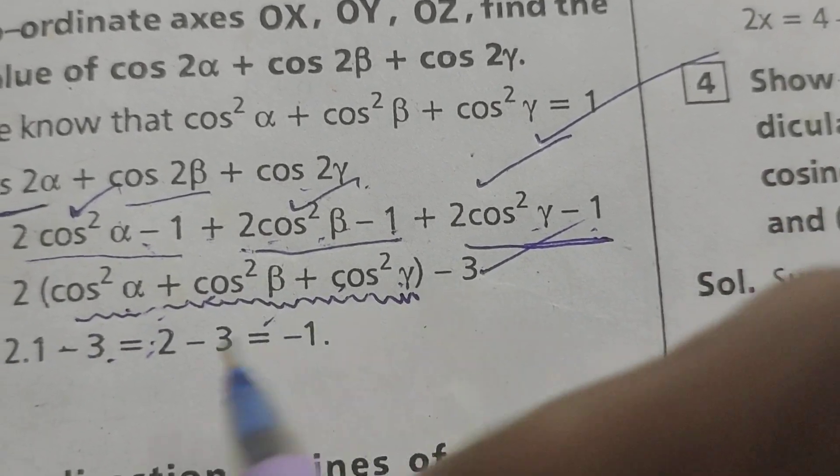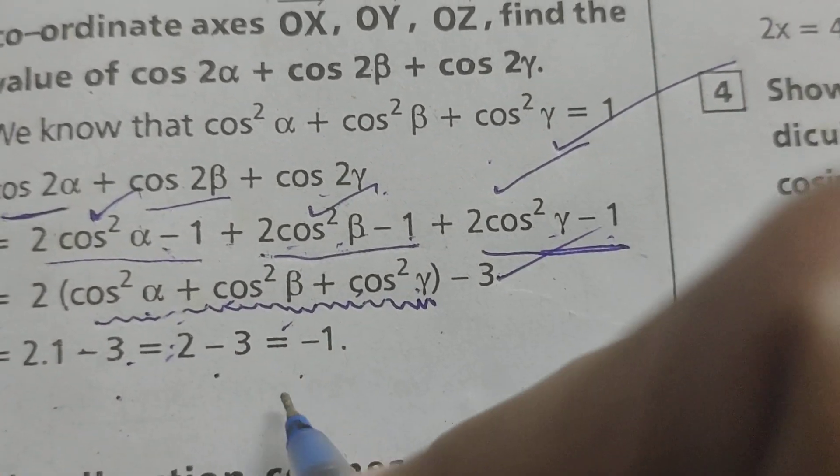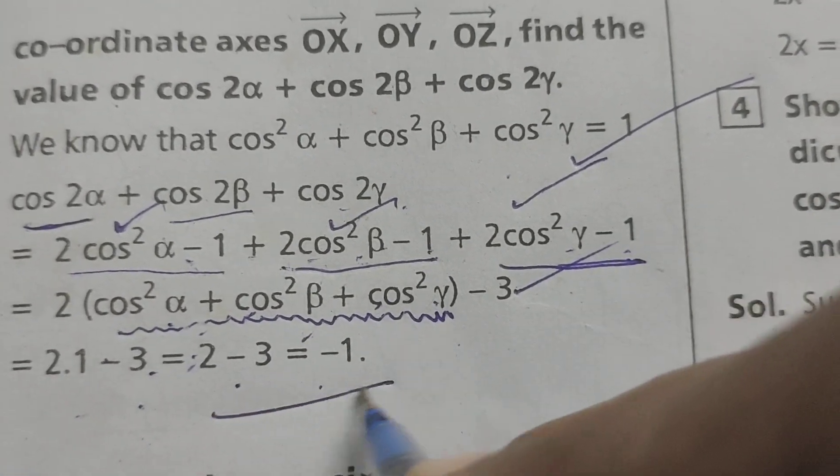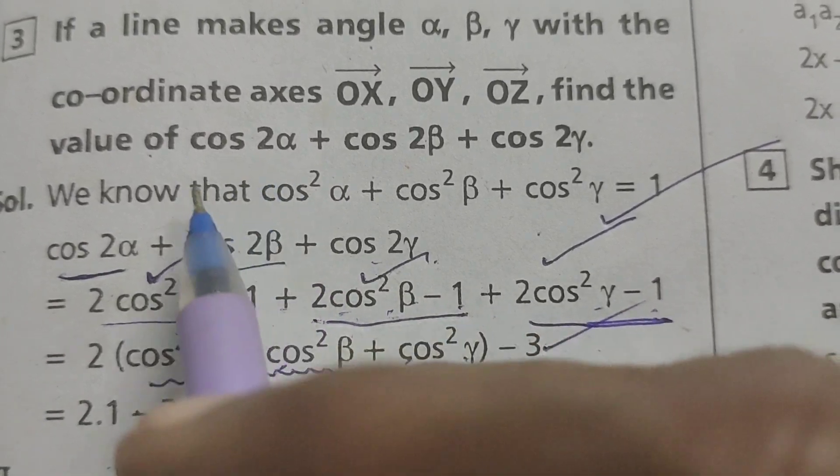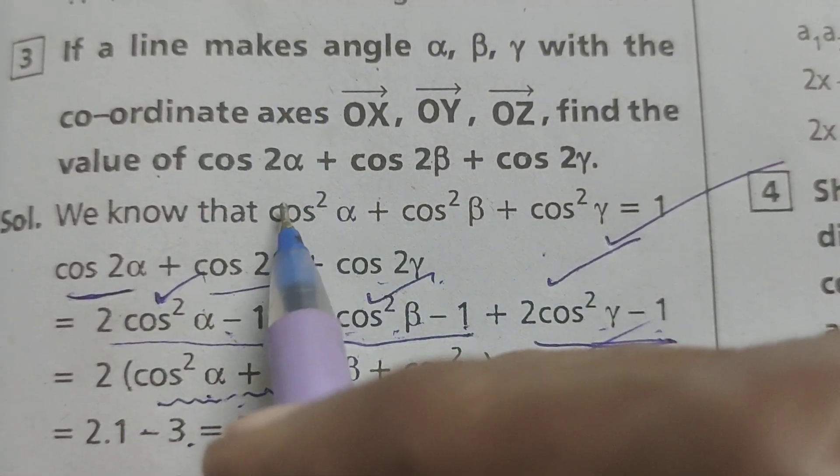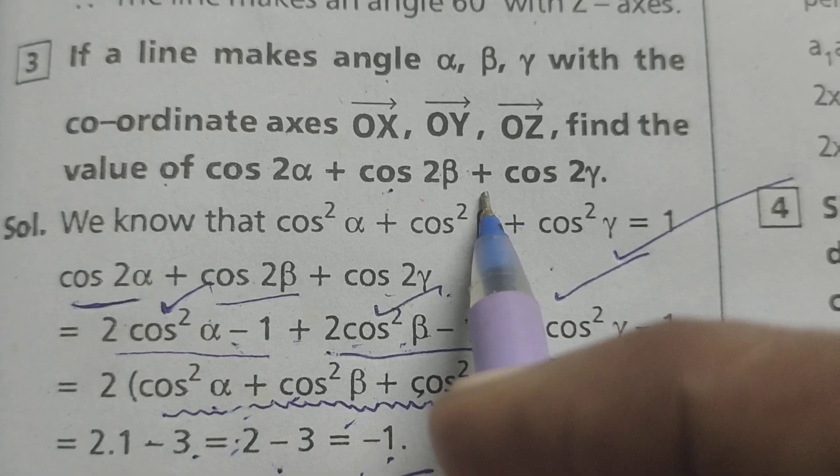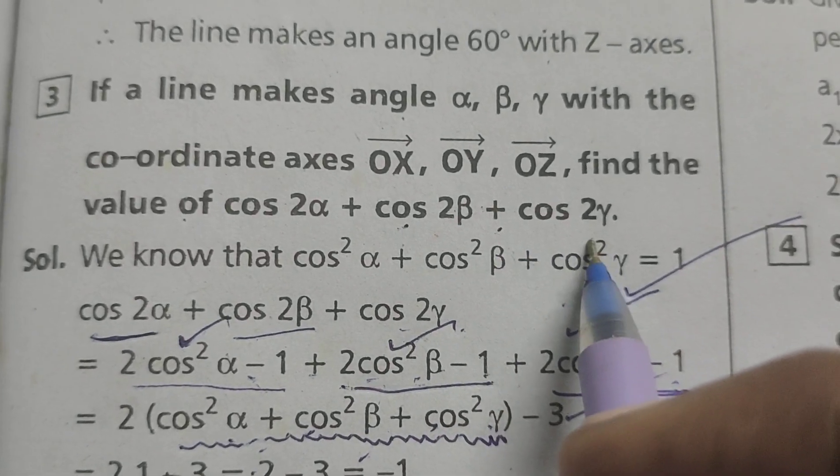2 into 1 minus 3. That is 2 minus 3 equals minus 1. Minus 1 is the value of this cos2α + cos2β + cos2γ.